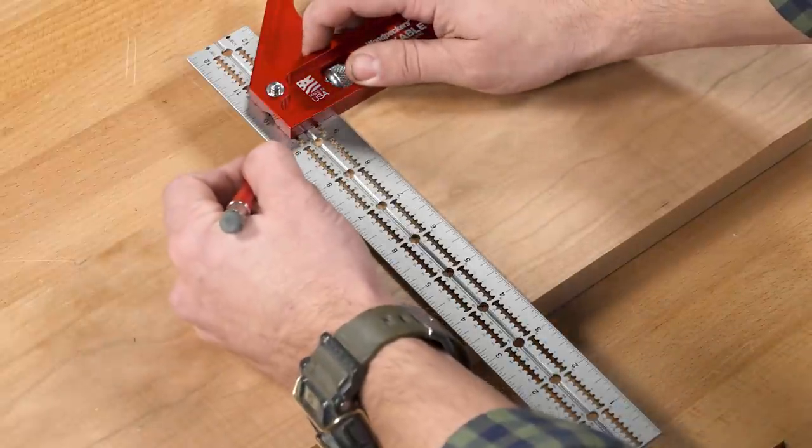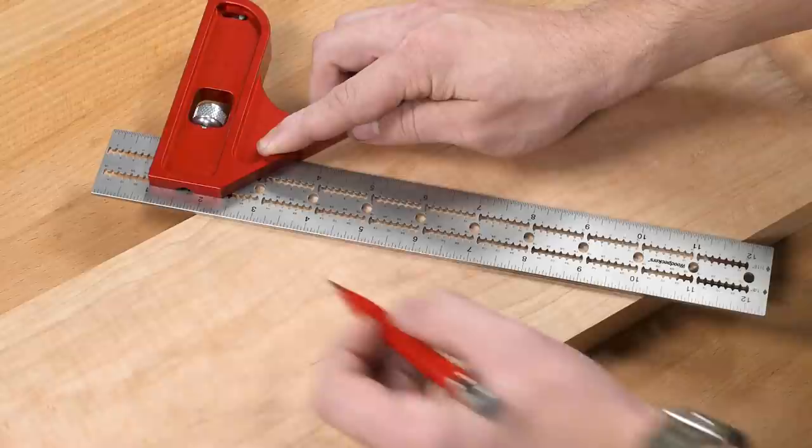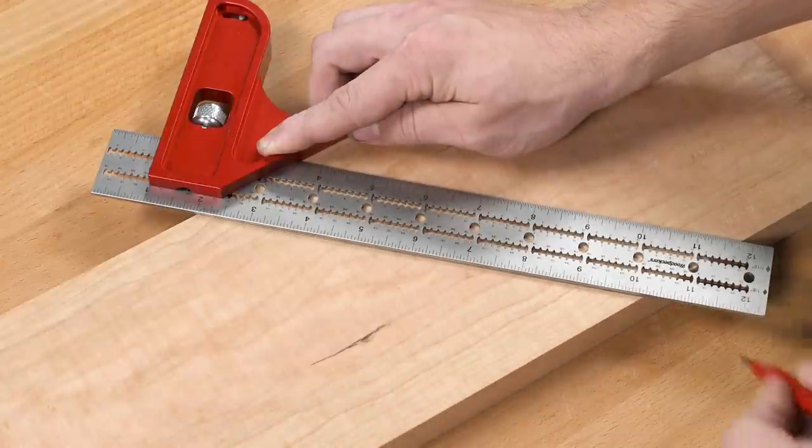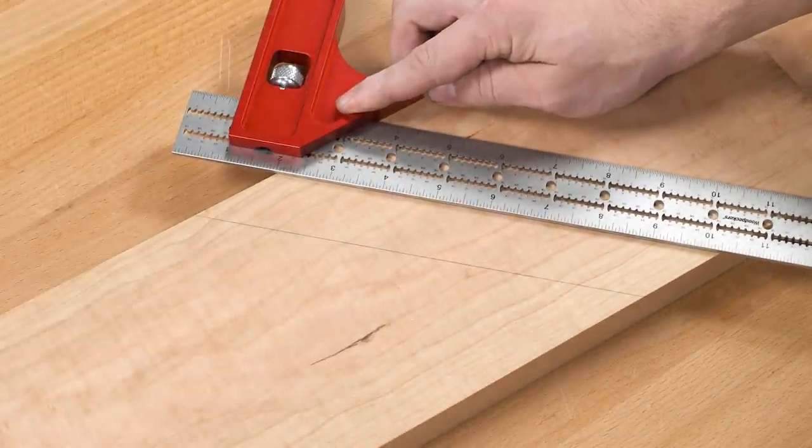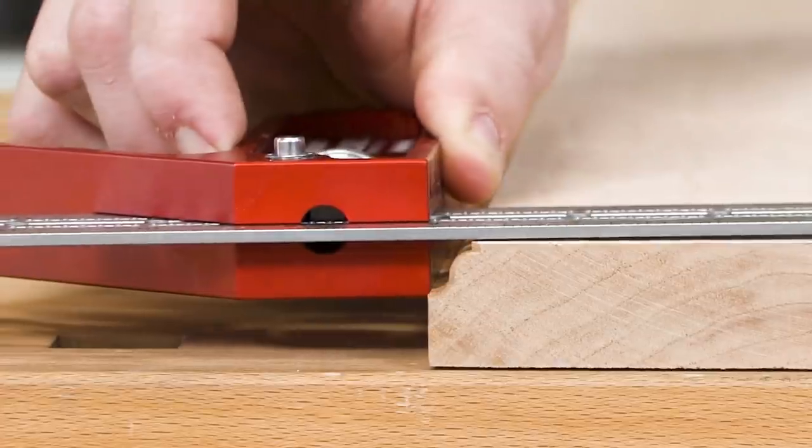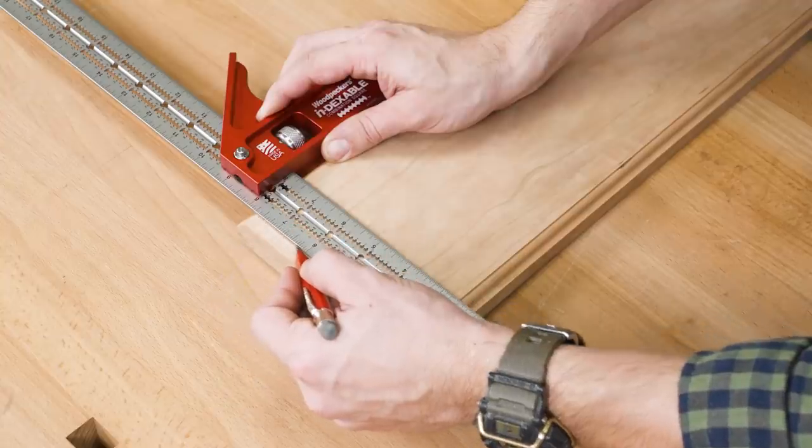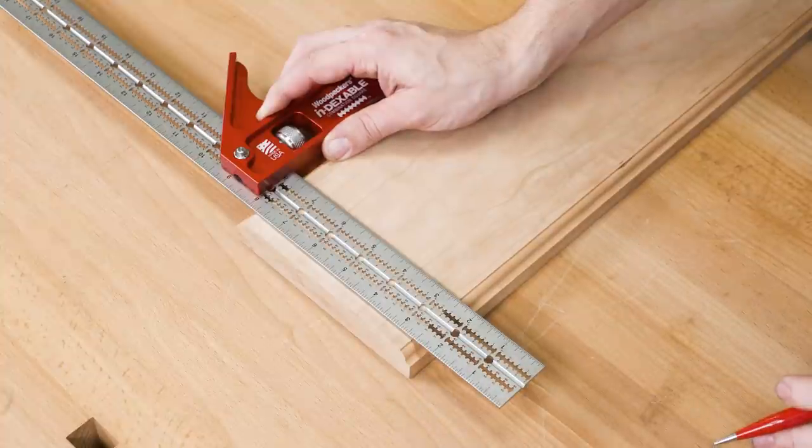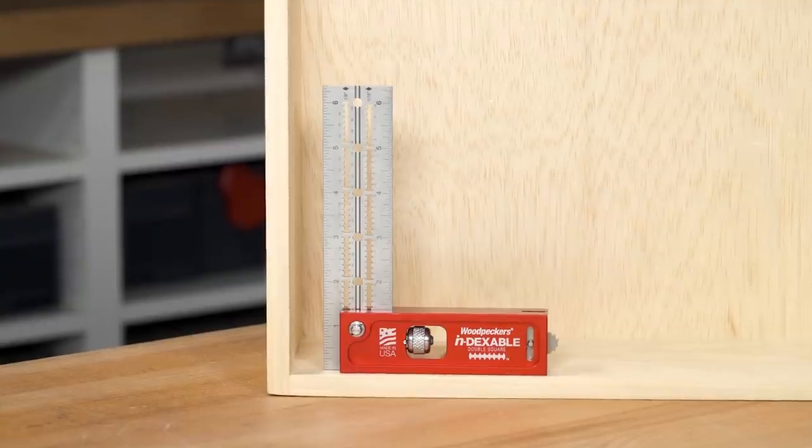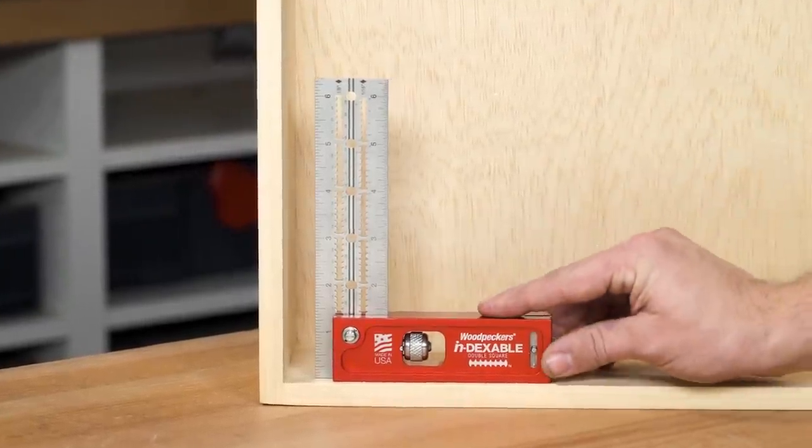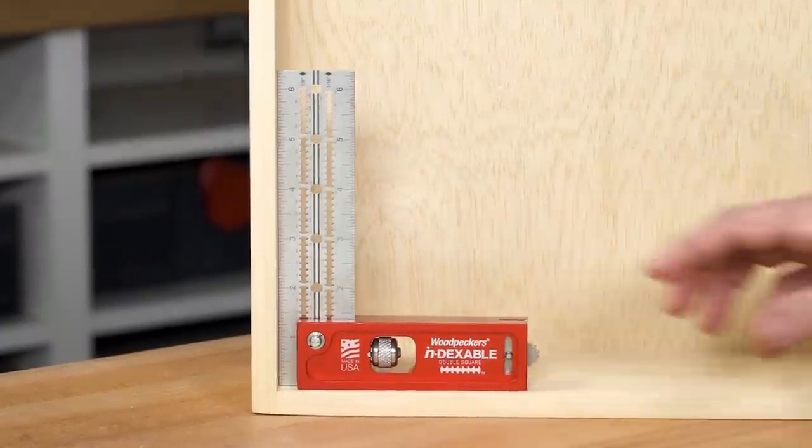The combination square gives you a square and a miter square in the same tool. The XL models have a head that is a full inch thick. You'll never worry about molded edges throwing off your angle. The double squares are square on both sides and a bit more compact than the combination squares.